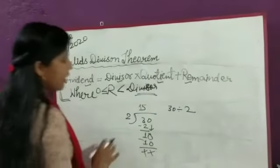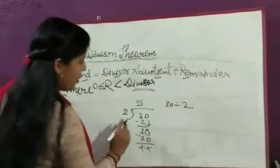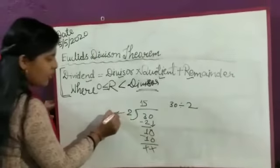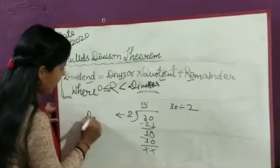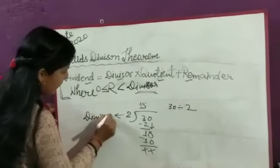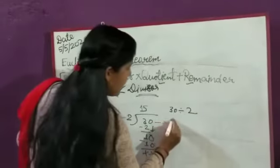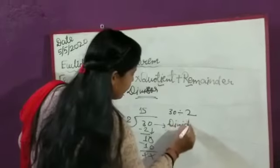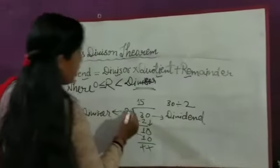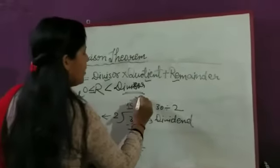Nothing is left here, so the remainder is 0. Now, the number 2 is the divisor. 30 is the dividend. 15 is the quotient.